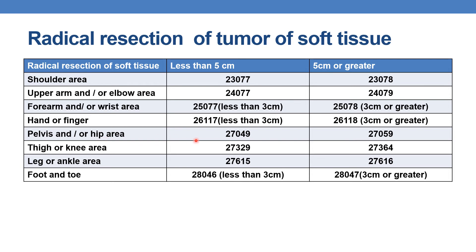For radical resection of tumor of soft tissue of pelvic and/or hip area: if less than 5 centimeters, CPT is 27049; if 5 centimeters or greater, it is 27059. For thigh or knee area: if less than 5 centimeters, CPT is 27329; if 5 centimeters or greater, it is 27364. For leg or ankle area: if less than 5 centimeters, CPT is 27615; if 5 centimeters or greater, it is 27616. For foot and toe — diameter threshold differs — if less than 3 centimeters, CPT is 28046; if 3 centimeters or greater, it is 28047.